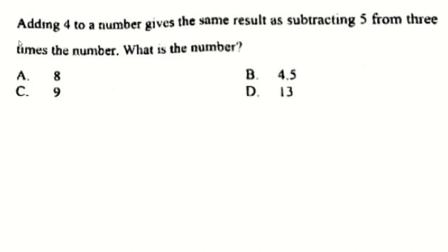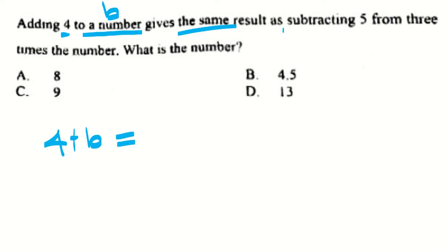The next question says: adding 4 to a number — let the number be b — gives the same result as subtracting 5 from 3 times the number. Adding 4 to a number means 4 plus b, and this equals subtracting 5 from 3 times a number, which means 3b minus 5. They are equal: 4 plus b equals 3b minus 5.